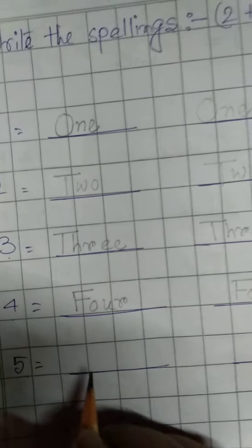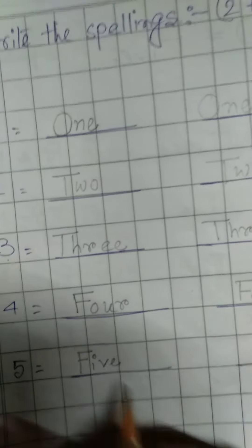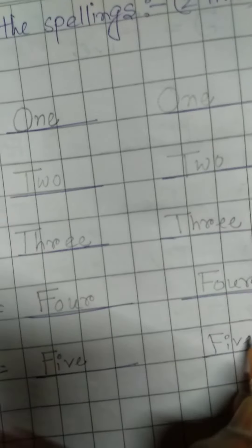Now this is number 5. What is the spelling of 5? F-I-V-E. What is the spelling of 5? F-I-V-E.